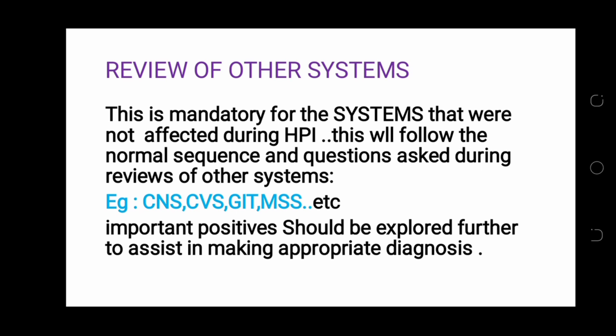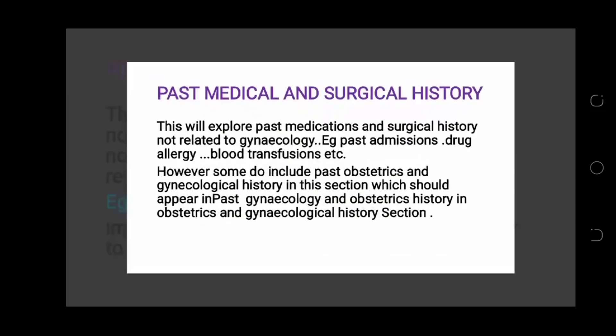Review of other systems is mandatory — this covers systems that were not affected by the chief complaint. You may review all systems as quickly as possible, including the central nervous system, cardiovascular system, genitourinary system, and musculoskeletal system. All systems not affected during the chief complaint are important to review in relation to gynecological history.